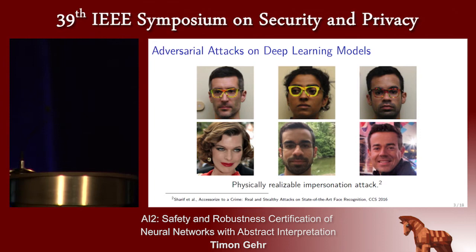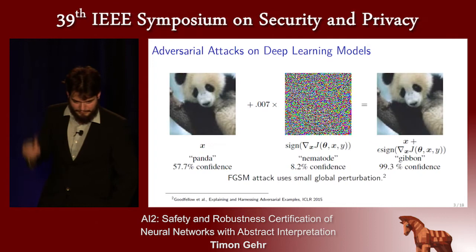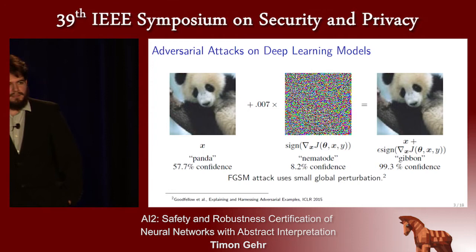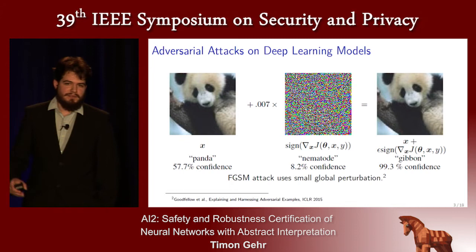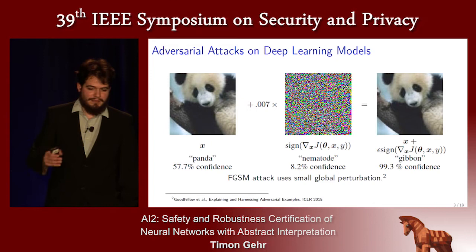There are many other kinds of adversarial attacks on deep learning models. For example, you can actually impersonate someone else by just wearing some sort of funky goggles. There are also attacks that are not perceptible by a human. Here we have an image of a panda bear, and then we add some noise to it, and now the neural net is actually very confident that this is a gibbon. There's been a lot of work on attacking neural networks, also some heuristic defenses that empirically improve robustness a little bit. But there's been less work on proving that neural networks actually do what they're supposed to do — that they don't behave differently on specific images if you just change the image a little bit.